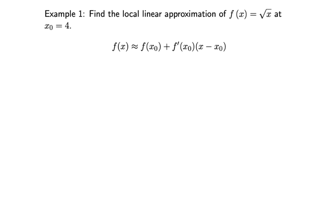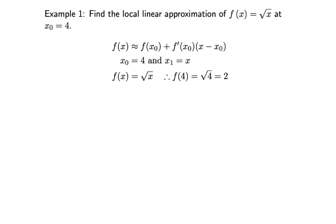Example 1: Find the local linear approximation of f(x) = √x at x₀ = 4. Here x₀ = 4 and x₁ = x. Since f(x) = √x, we have f(4) = √4 = 2.